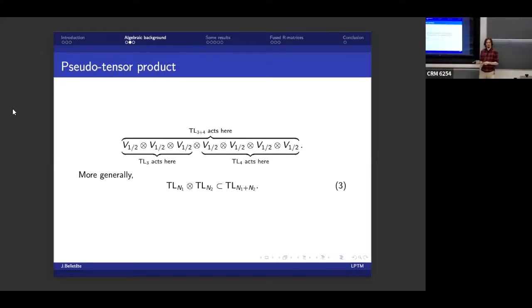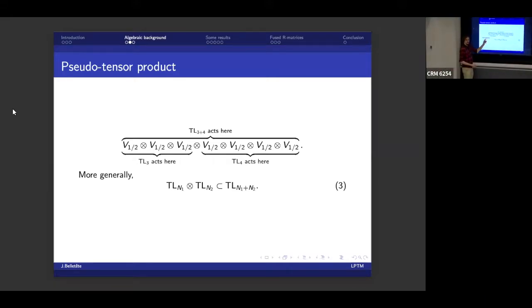This algebra has a lot of very interesting properties, but the one that I'm mainly concerned with is this pseudo tensor product. So what happens is that if I have a chain of like seven sites like this, I can look at it in two ways. I can look at the algebra of all the R matrices, every site, which will give me a representation of TL_7, because there are seven sites.